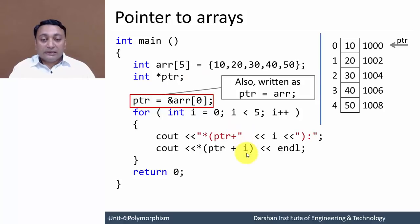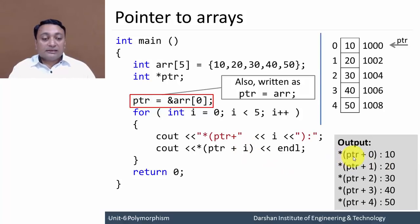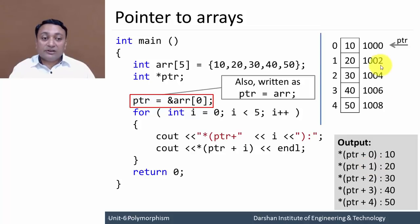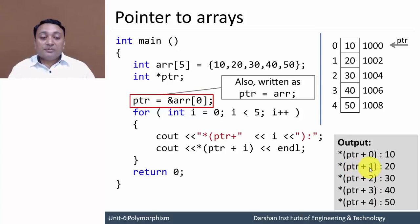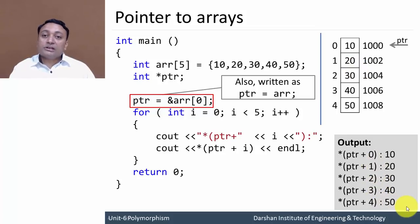I am writing a for loop. Inside it: *(pointer + 0), *(pointer + 1), *(pointer + 2), up to 5 elements. The pointer increments in a scale of 2 bytes because the pointer variable is of type integer. If it is character type it increments by 1; if float it increments by 4 bytes. So *(pointer + 0): pointer is 1000 + 0 = 1000, value at 1000 is 10. *(pointer + 1): 1000 + 1 is actually 1002, value at 1002 is 20, and so on. This is how pointer to arrays works.